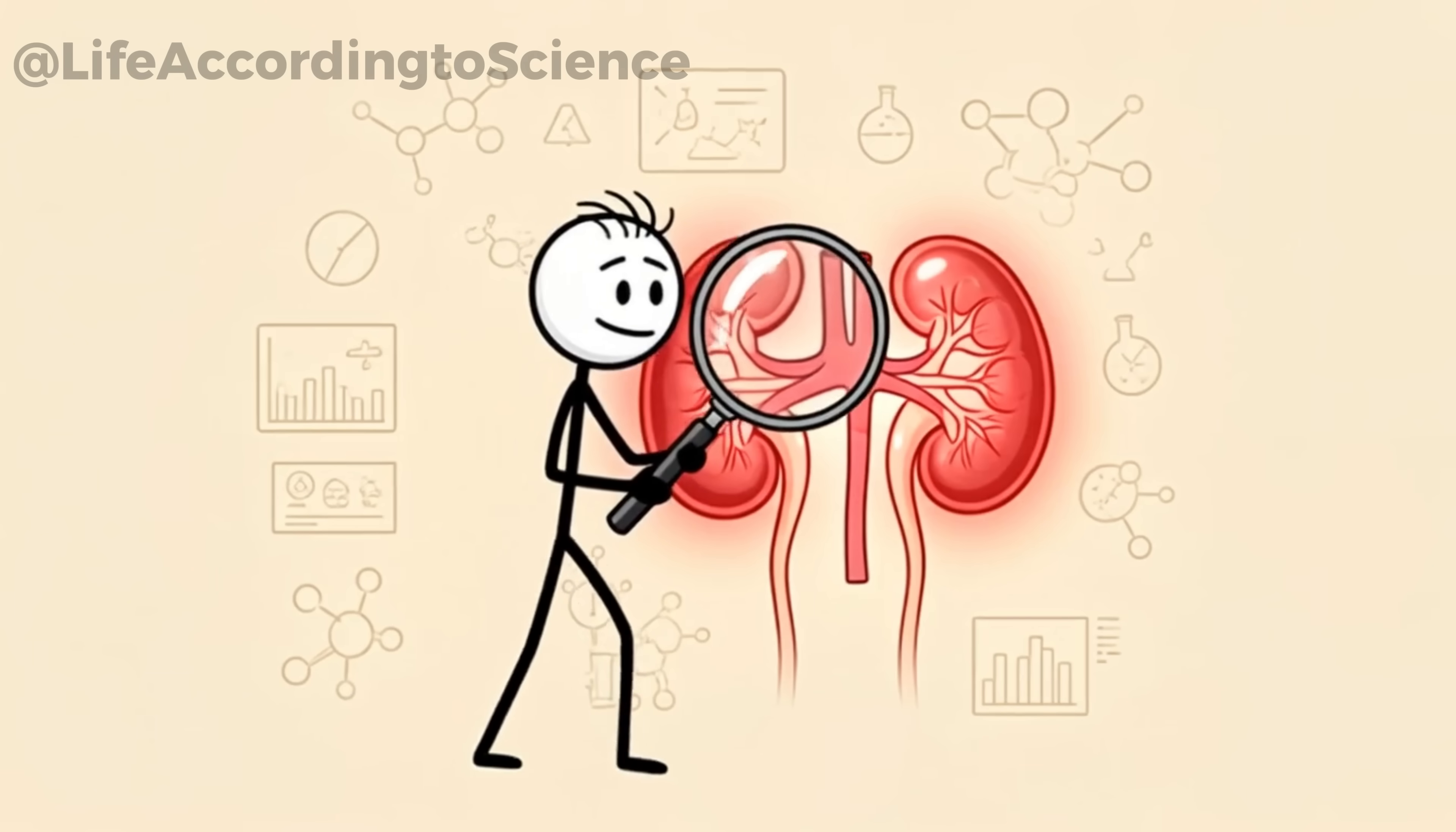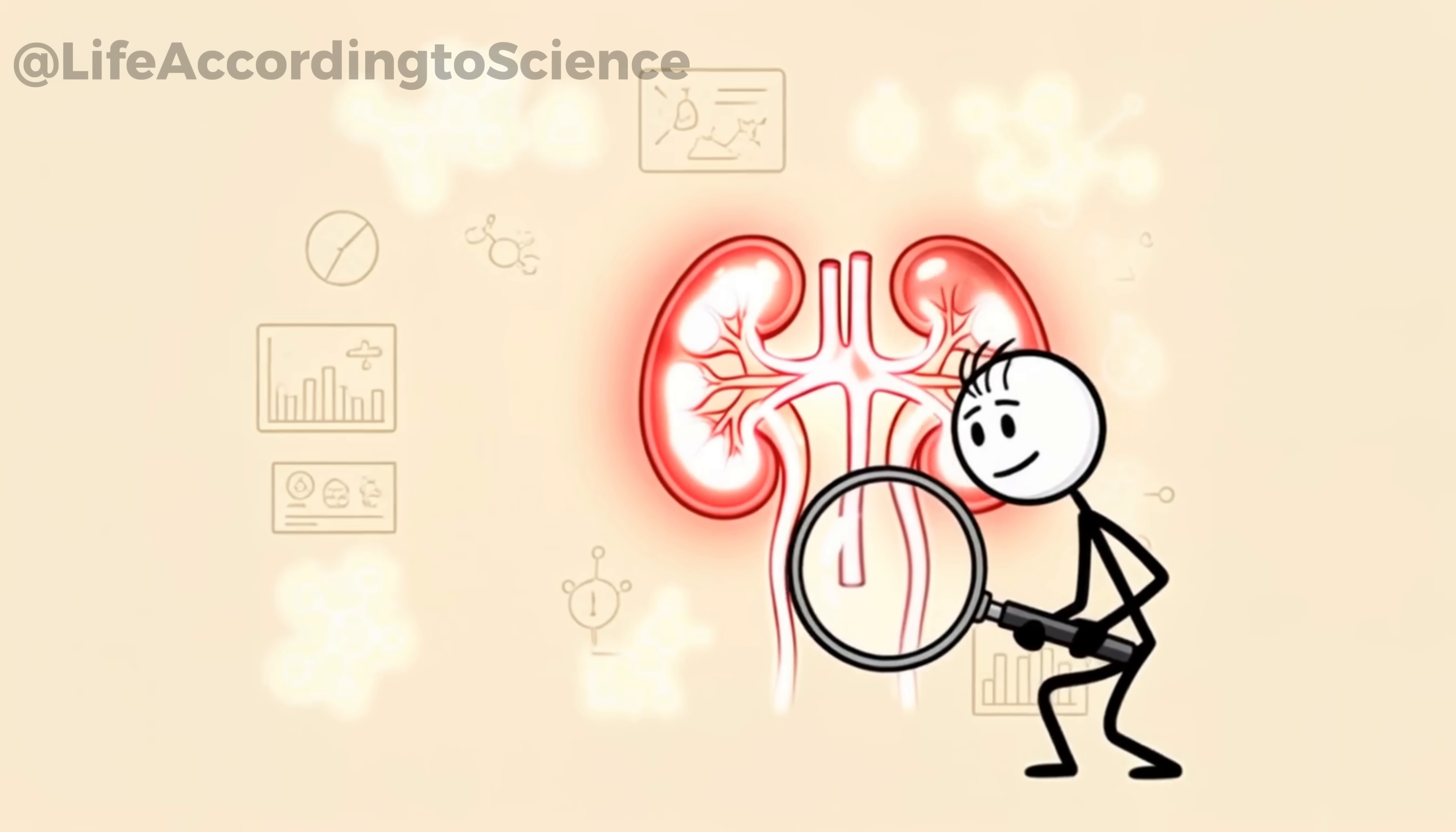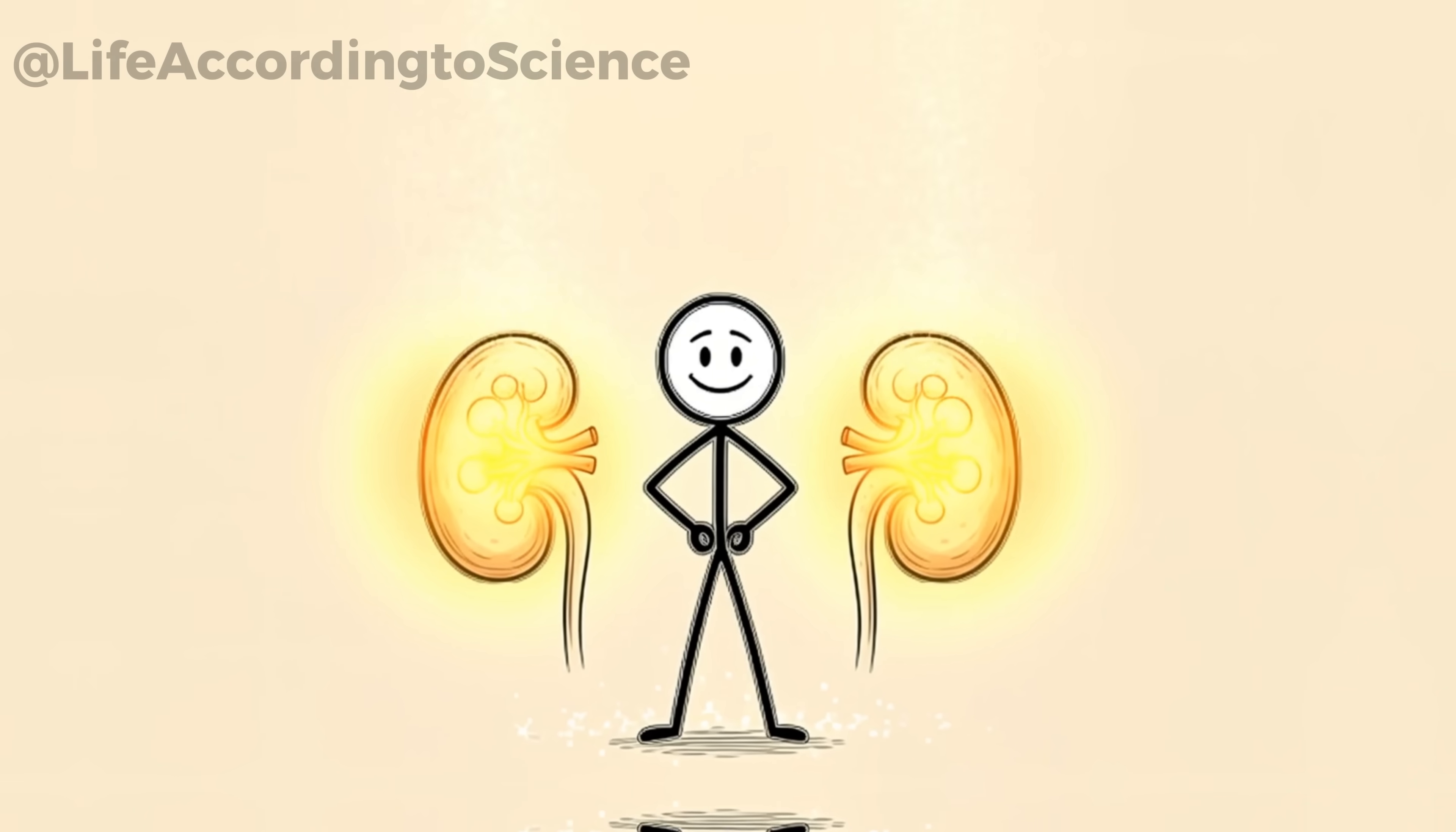The sudden drop in sugar means less pressure on the filtration system almost immediately. Studies reveal that reducing sugar lowers the amount of advanced glycation end products (AGEs), molecules that accelerate kidney aging. Within just days, the blood becomes cleaner and your kidneys start working more efficiently.